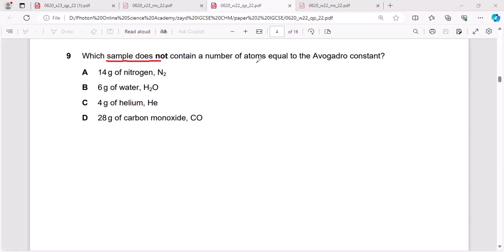Which sample does not contain a number of atoms equal to Avogadro constant? Here the thing is, number of atoms equal to Avogadro constant. So Avogadro constant is 6.02 times 10 raised to the power 23 particles.